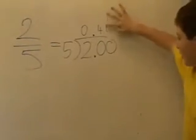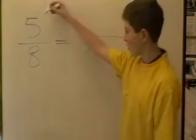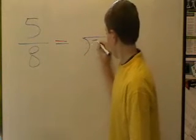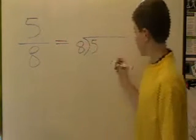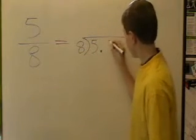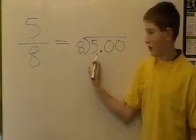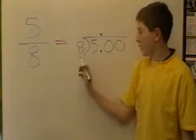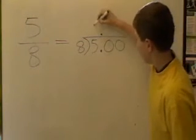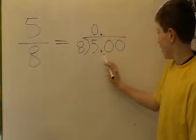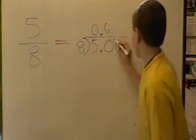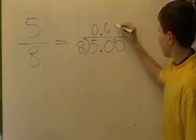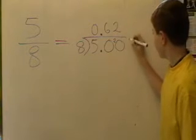You don't need the trailing zero, but it's still the right answer. Our last fraction is 5 eighths. Now 5 eighths is the same as 5 divided by 8. We add a decimal point and two zeros. The value of the 5 doesn't change. Before we forget, we add another decimal point. Now 8 into 5 is 0, and 8 into 50 goes 6 times with 2 left over.